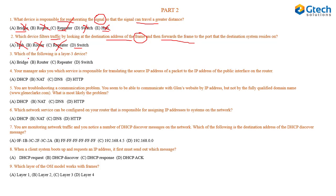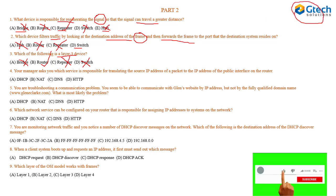Question three: which of the following is a layer three device? Bridge and switch are layer two devices. Router is a layer three device. Repeater is a layer one physical layer device. We have discussed this in our previous class, and a link is provided above if you need to review it.